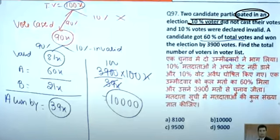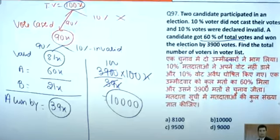To participate in the election, 10% of voters didn't cast their votes, and 10% of voters cast invalid votes. So if we take total voters as 100x, 10% of voters cast — meaning 90% of voters cast their votes — and so it's 10% invalid.